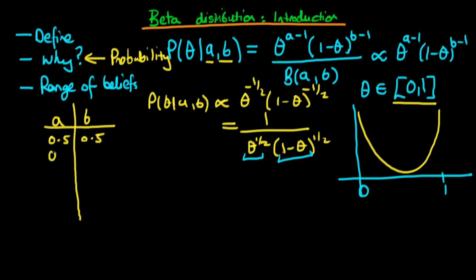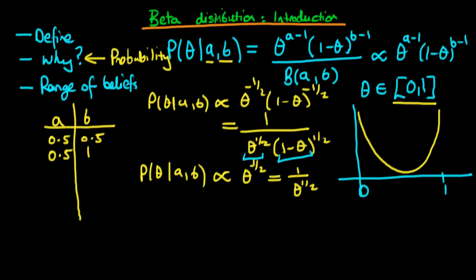If we keep a at a half and increase b to 1, our probability distribution is proportional to theta to the power of minus a half — the second term disappears because b minus 1 is now 0. So the distribution is just proportional to 1 over theta to the power of a half. In this case, the distribution looks like the mauve line I'm drawing: there's still an asymptote at 0, but it's no longer symmetric. Due to the symmetry of the problem, increasing a to 1 and keeping b at a half would give exactly the same shape flipped around.